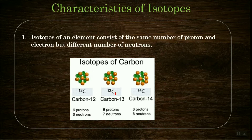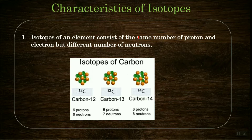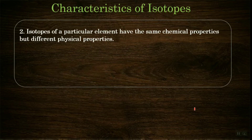Another example: carbon-12, carbon-13, and carbon-14. In all three, the number of protons is 6, and therefore the number of electrons is also 6. The difference is in the neutrons: C-12 has 6 neutrons, C-13 has 7 neutrons, and C-14 has 8 neutrons. So isotopes of an element have the same number of protons and electrons but different numbers of neutrons.